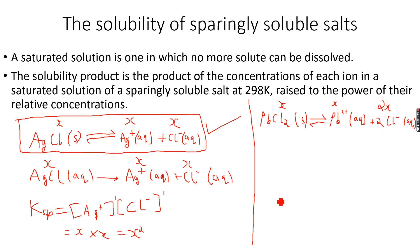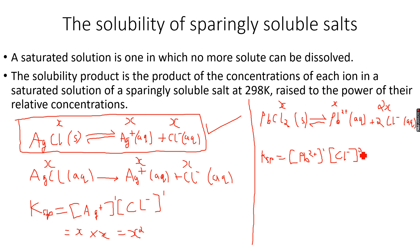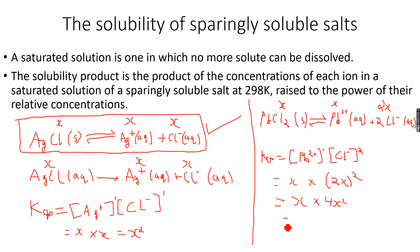When I write the Ksp expression, it will be: Ksp = [Pb²⁺]¹ × [Cl⁻]², because the stoichiometric coefficient of Cl⁻ is 2. So in this case it would be x × (2x)², which equals x × 4x², which equals 4x³.